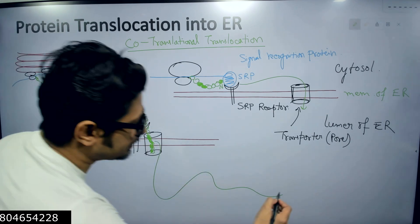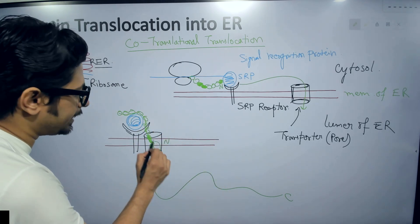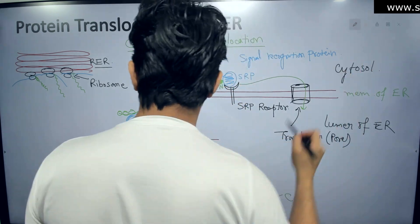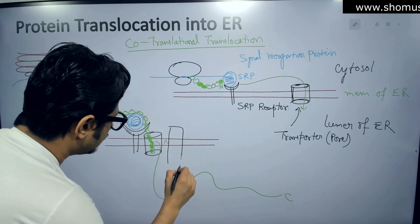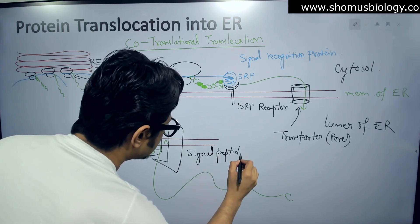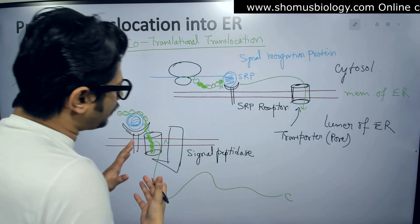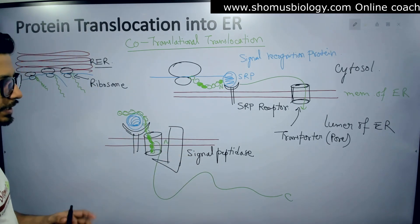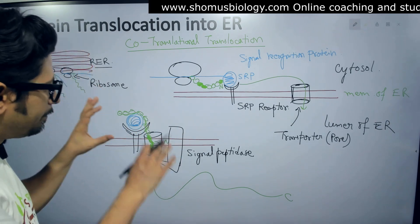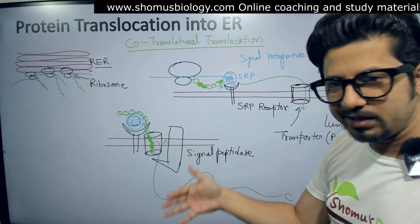Once the process of dragging is done — this is the C-terminal side, this is the N-terminal side — the signal sequence is still embedded in the membrane of the ER. There is a peptidase called signal peptidase, which is ER membrane-associated. Once the complete polypeptide is dragged inside the ER lumen, the signal peptidase cuts only the signal sequence out. The signal sequence remains embedded to the ER membrane, and the rest of the polypeptide chain — the functional part — is inserted inside the ER lumen.